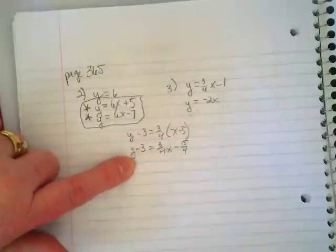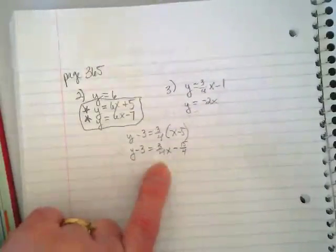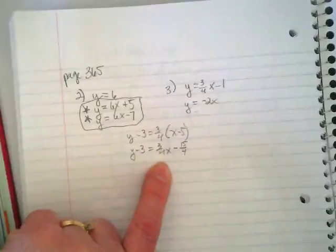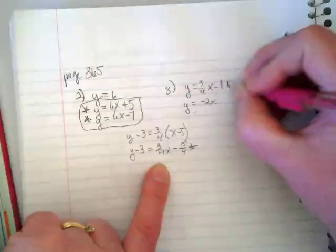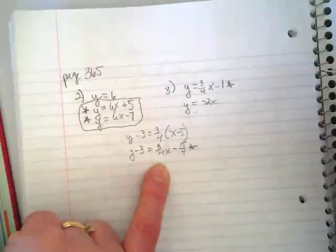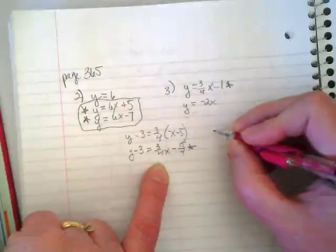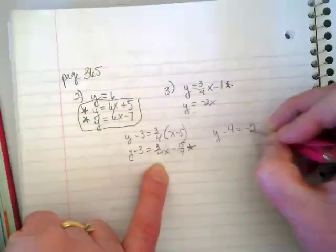So, Y minus three equals three-fourths X minus 15 over four. At this point, I don't even feel like I have to finish it. By adding this three to the 15 over four, is that going to change the three-fourths X? So, this one is equivalent with this one.